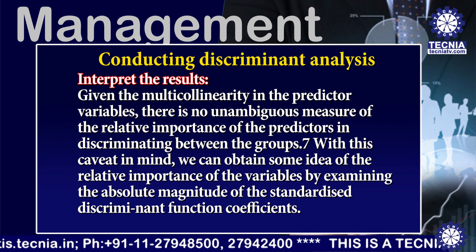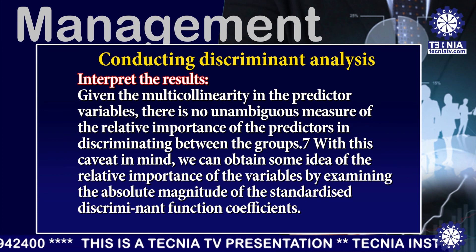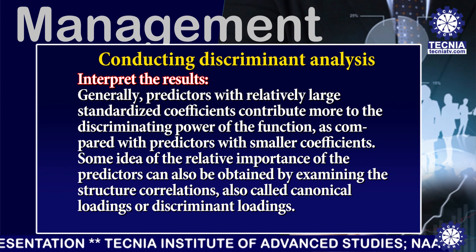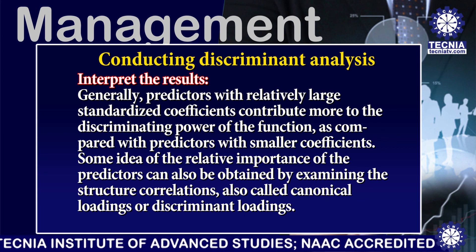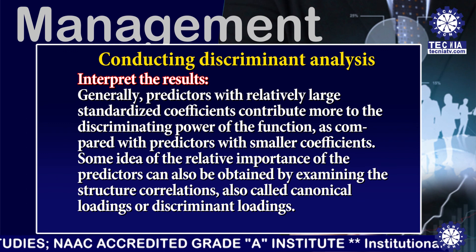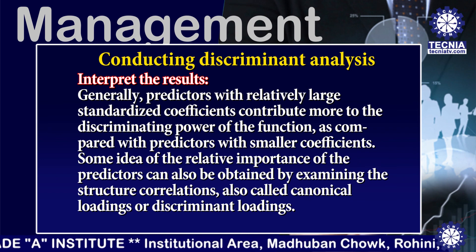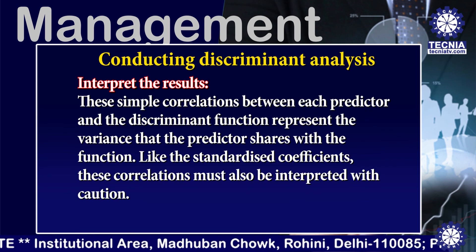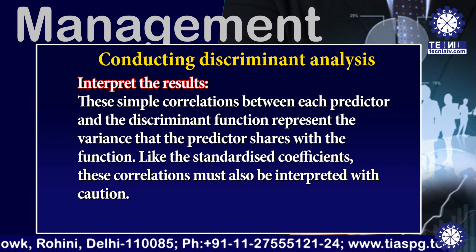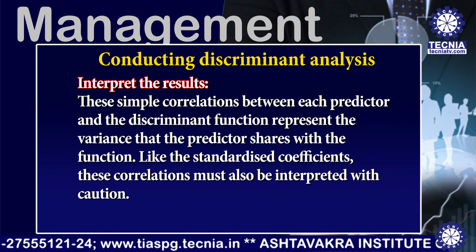With this caveat in mind, we can obtain some idea of the relative importance of the variables by examining the absolute magnitudes of the standardized discriminant function coefficients. Predictors with relatively large standardized coefficients contribute more to the discriminating power of the function. Some idea of relative importance can also be obtained by examining the structure correlations, also called canonical loadings or discriminant loadings — simple correlations between each predictor and the discriminant function representing the variance the predictor shares with the function. Like the standardized coefficients, these correlations must also be interpreted with caution.